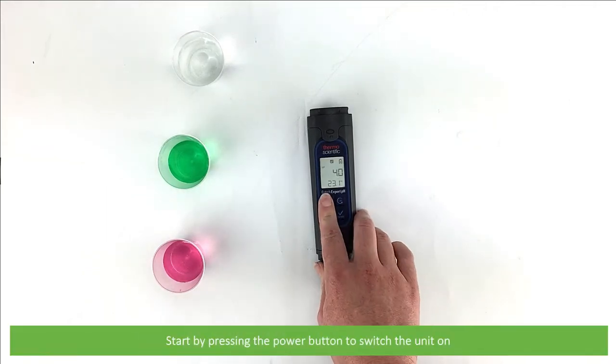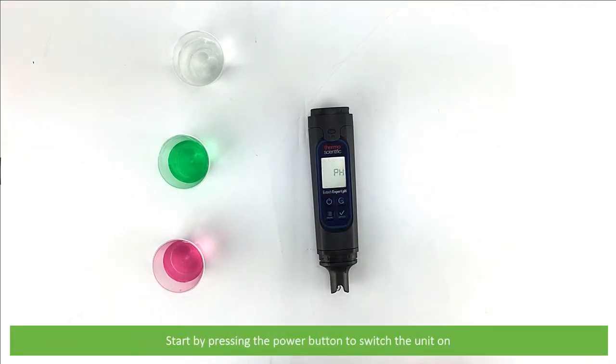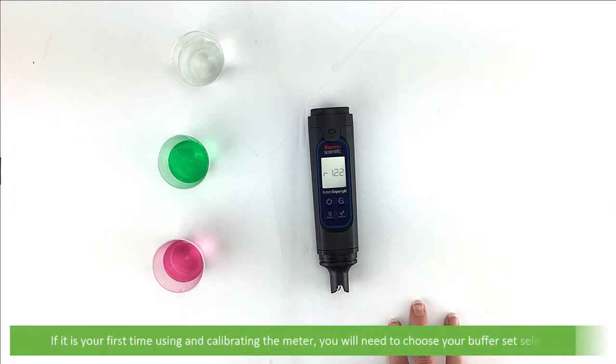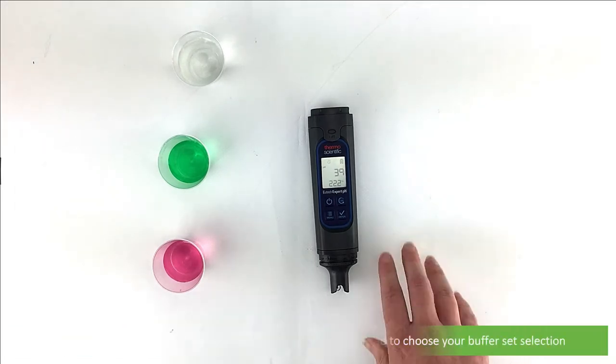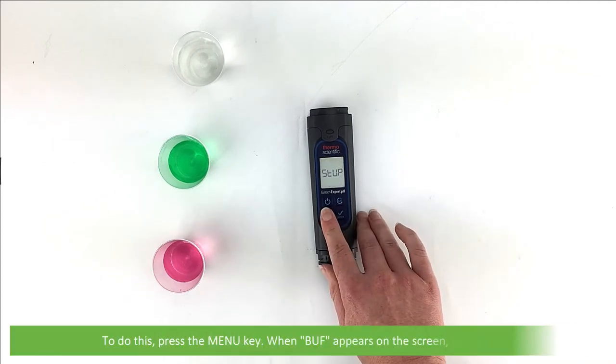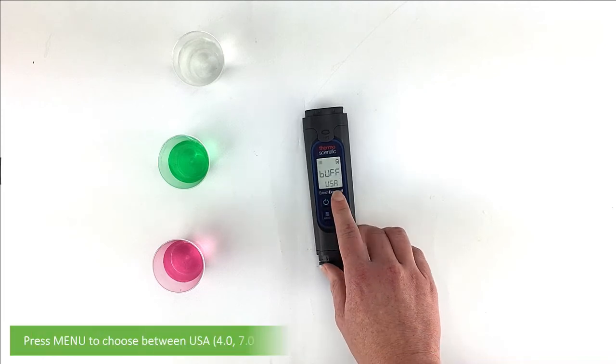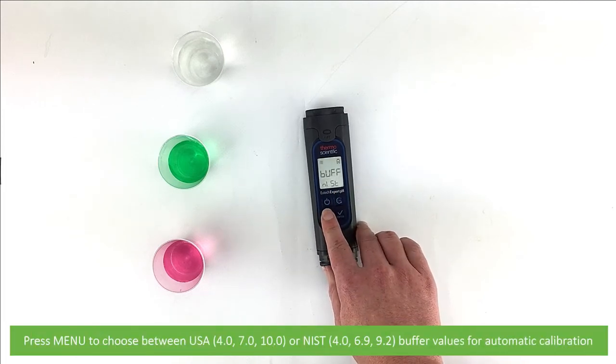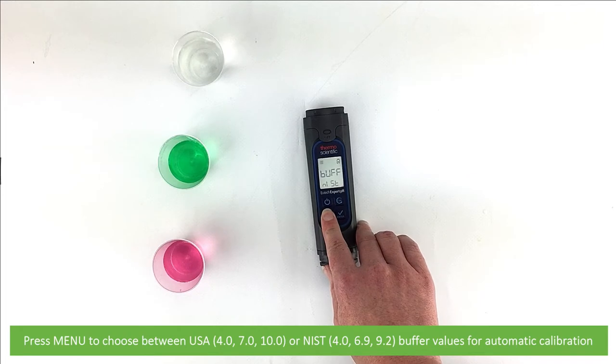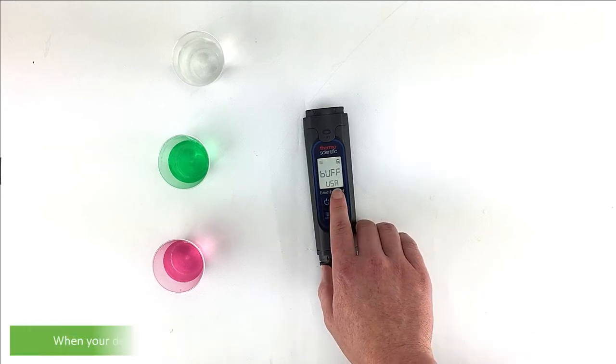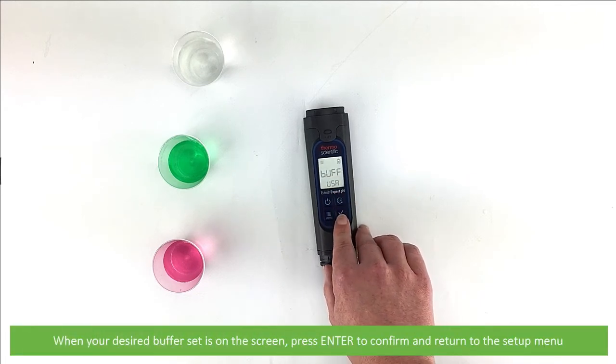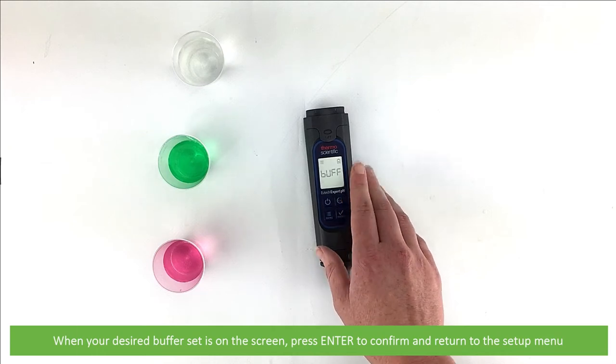Start by pressing the power button to switch the unit on. If this is your first time using and calibrating the meter, you will need to choose your buffer set selection. Press the menu key, and when BUF appears on the screen press enter. Then press the menu button to choose between USA or NIST buffer values for automatic calibration. When your desired buffer set is on the screen, press enter to confirm and return to the setup menu.